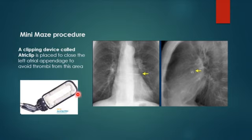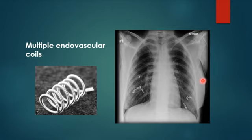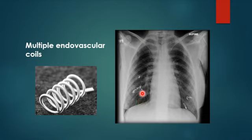This is how the clipping device looks on X-ray. There is also something called an endovascular coil — a minimally invasive device used for arteriovenous malformation or aneurysm. For example, in a patient with AVM in the lung, coils are placed to close off the sac and reduce the risk of bleeding. These endovascular coils occlude the malformation and reduce the risk of hemorrhage.